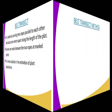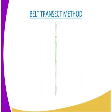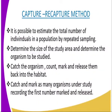We are going to have our third method of population estimation, which is known as the capture-recapture method. In this method, it is possible to estimate the total number of individuals in a population by repeated sampling. After selecting the study area, determine its size and choose the organisms to be studied. Select an appropriate technique for capturing the organisms. Catch the organisms, count, mark and release them back into the habitat, recording the first number marked and released.